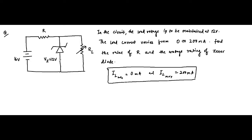To determine R we use KVL equations. Two things are very important here: the input voltage is fixed, and as a result the current flowing through the circuit — this current I — will also be fixed, because the input is fixed, the Zener voltage is fixed, and resistor R is fixed. So obviously this source current will be fixed. Changes will happen on the other side: IZ and IL.